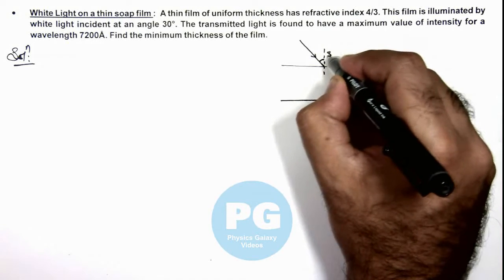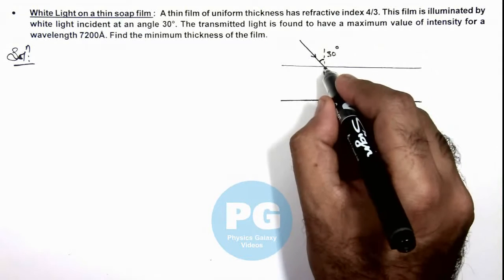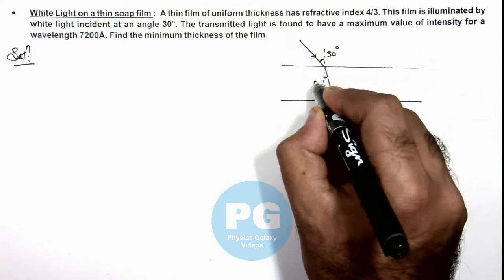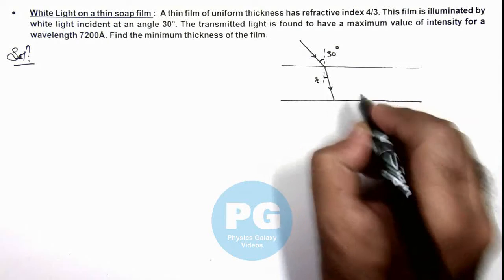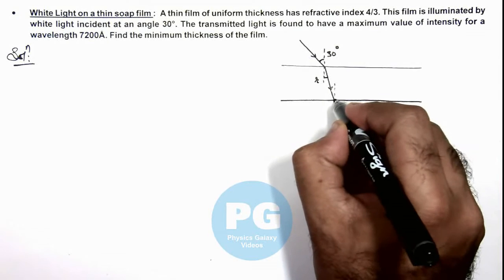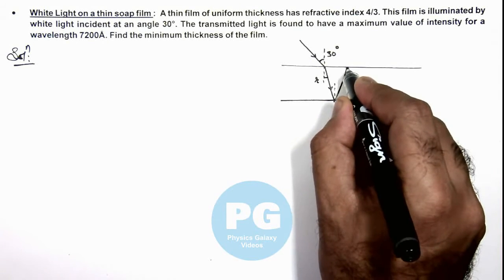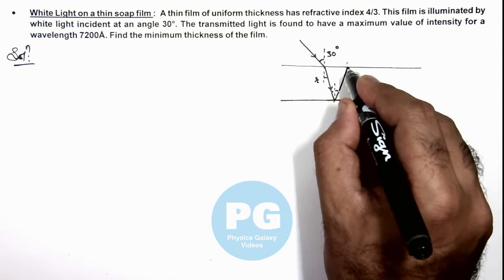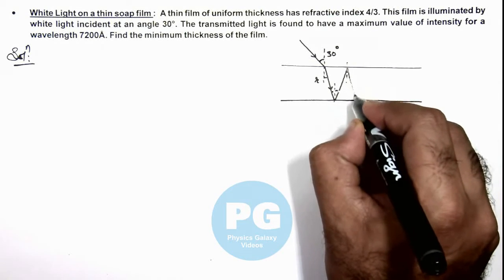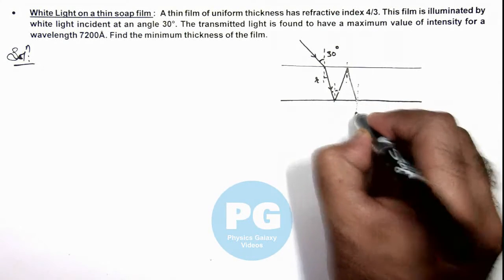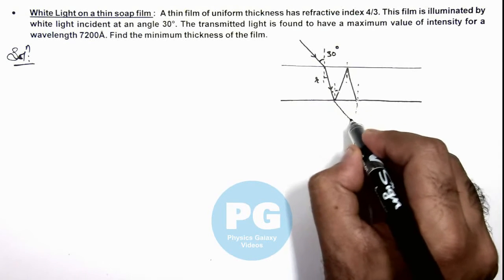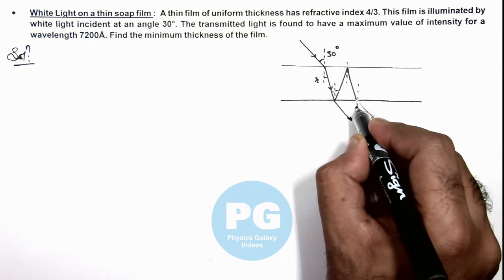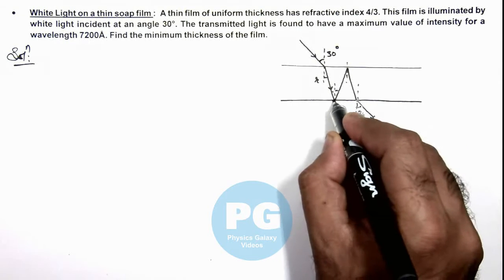If the incidence angle is 30 degrees, light will enter in the film at an angle of refraction r, and on the other face it is also reflected at the same angle r. And again it is reflected from the top surface and finally it comes out in form of two beams from the surface which are at an angle 30 degrees.